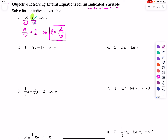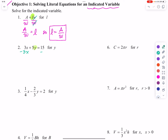Looking at number two, we are solving for Y, so we need to isolate that term. We subtract 3X from both sides, and we now have 5Y equals 15 minus 3X. We divide every term by 5 and cancel those 5s. We have Y is equal to 3 minus three-fifths X.